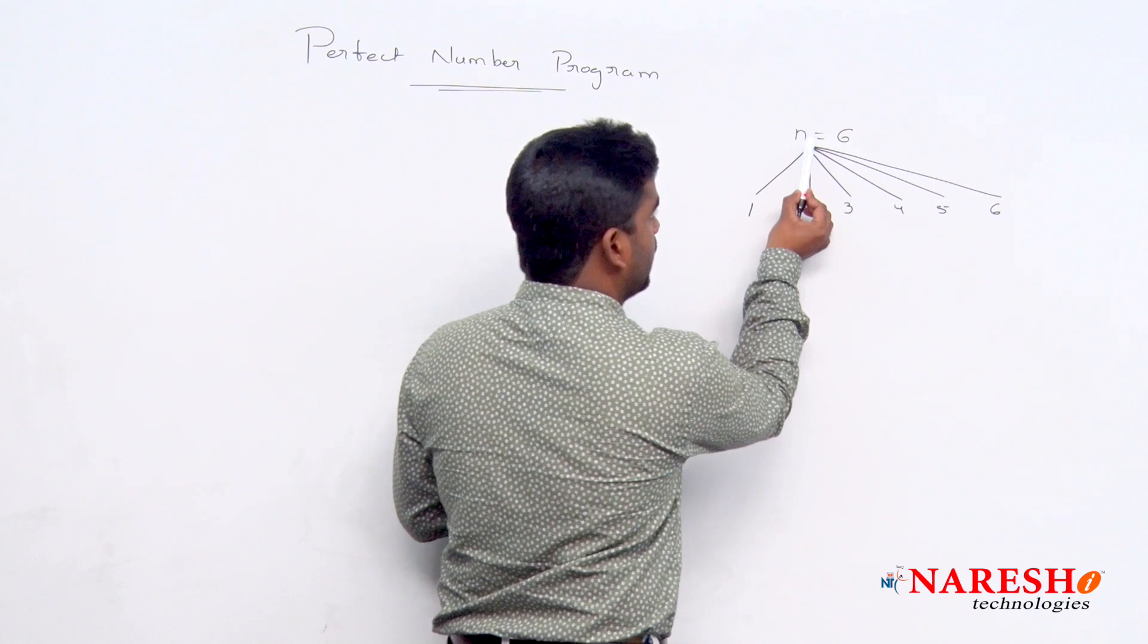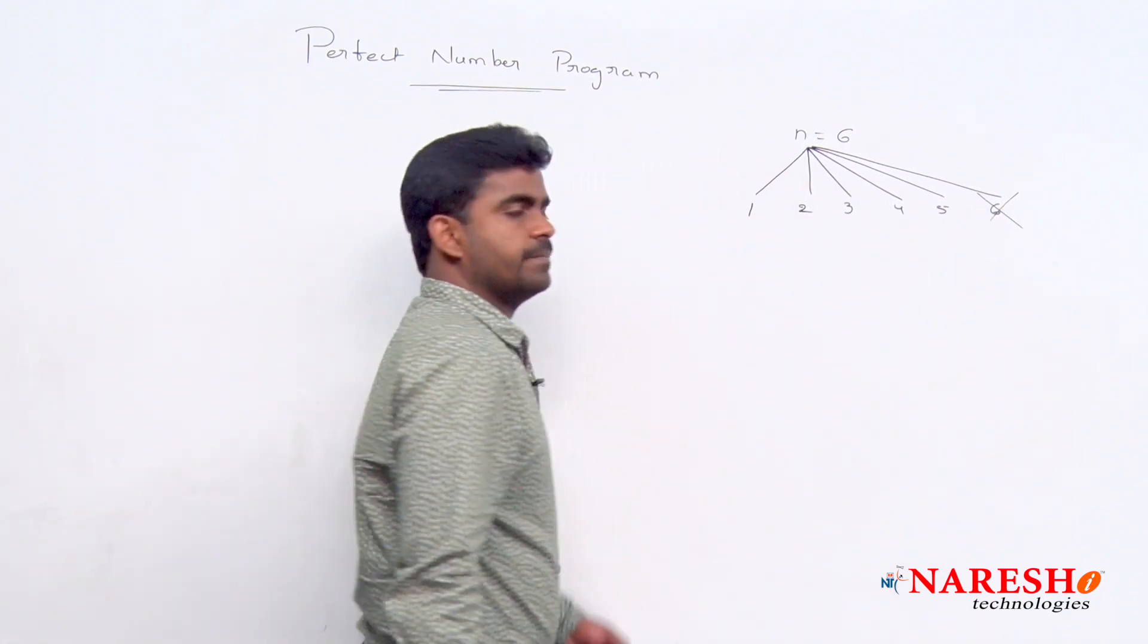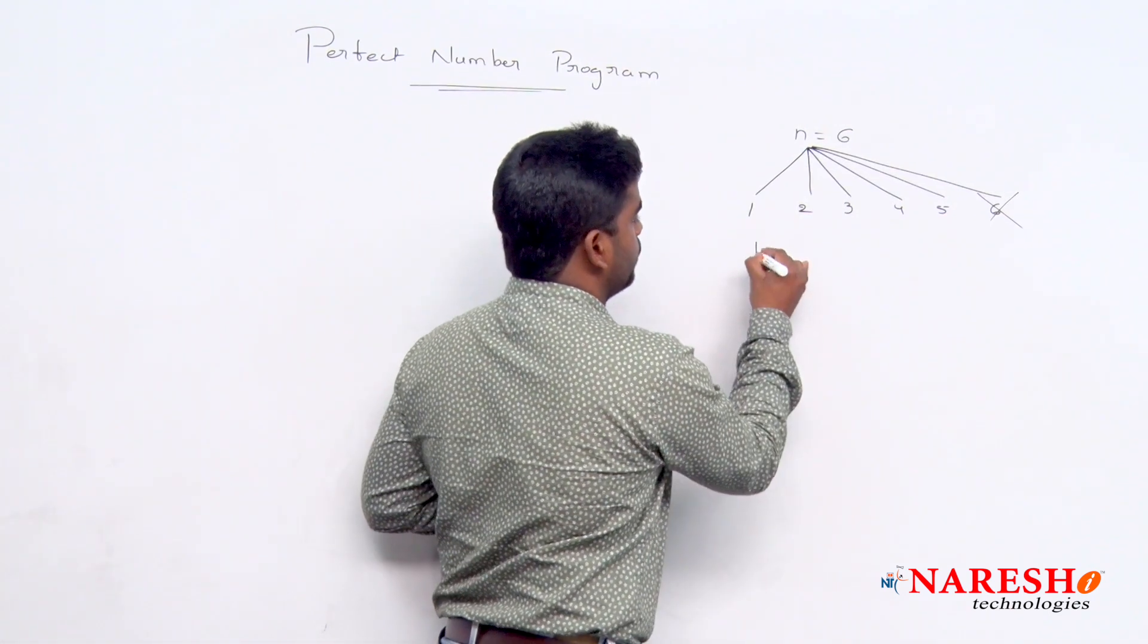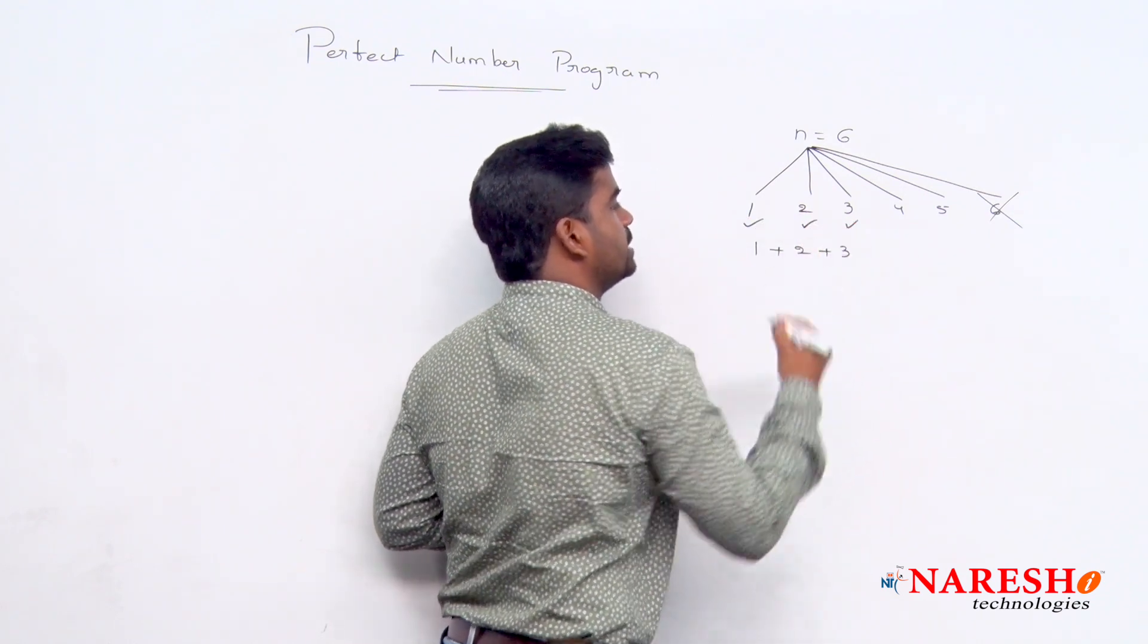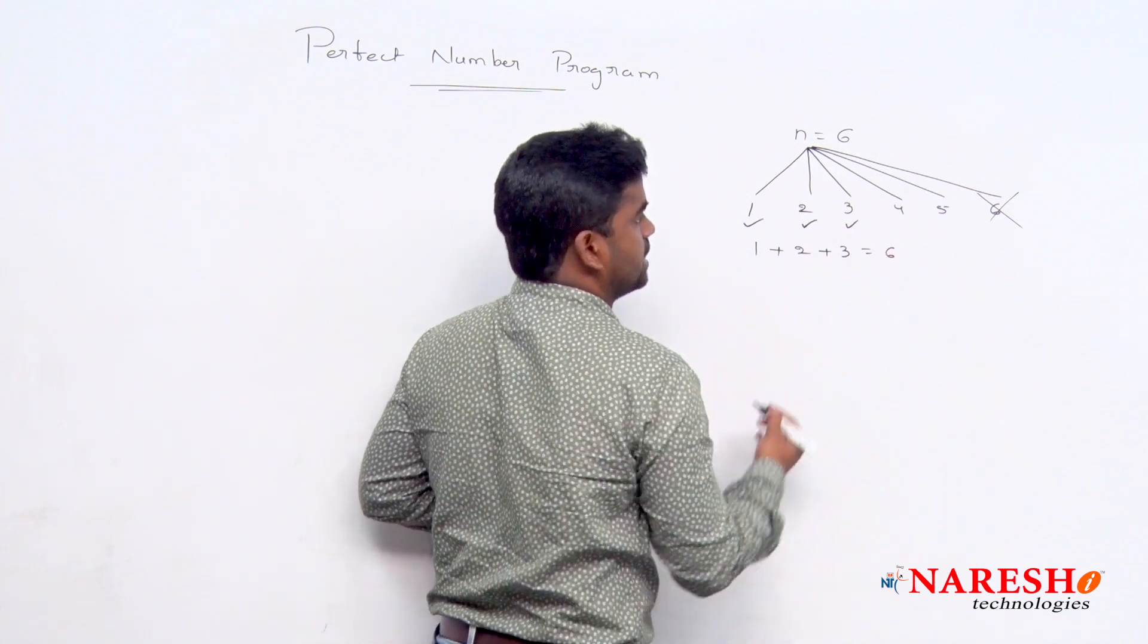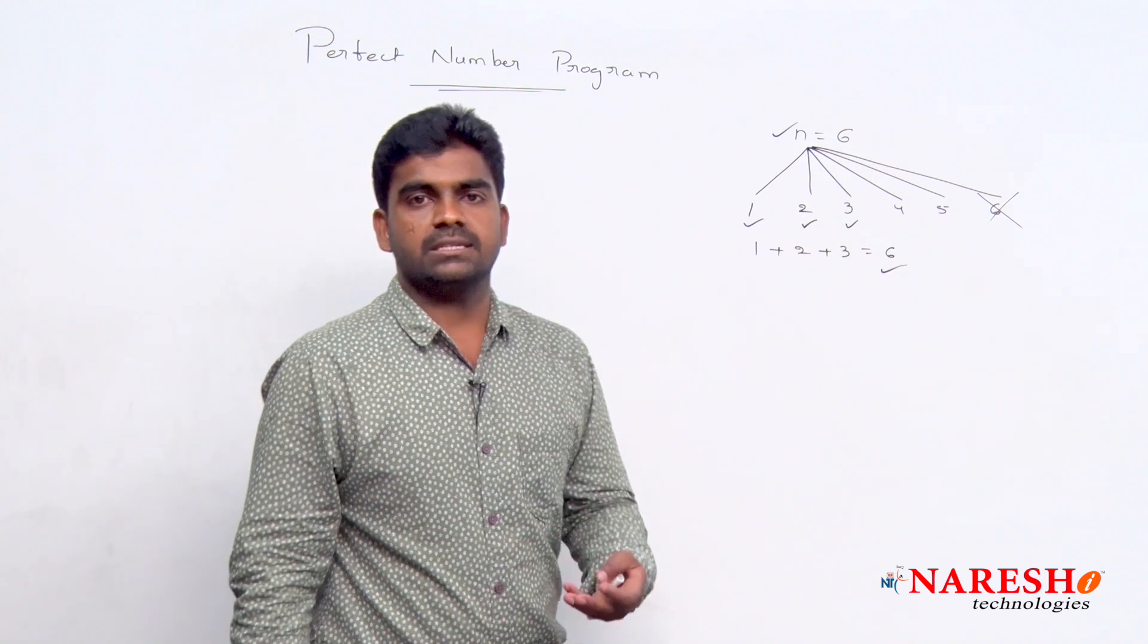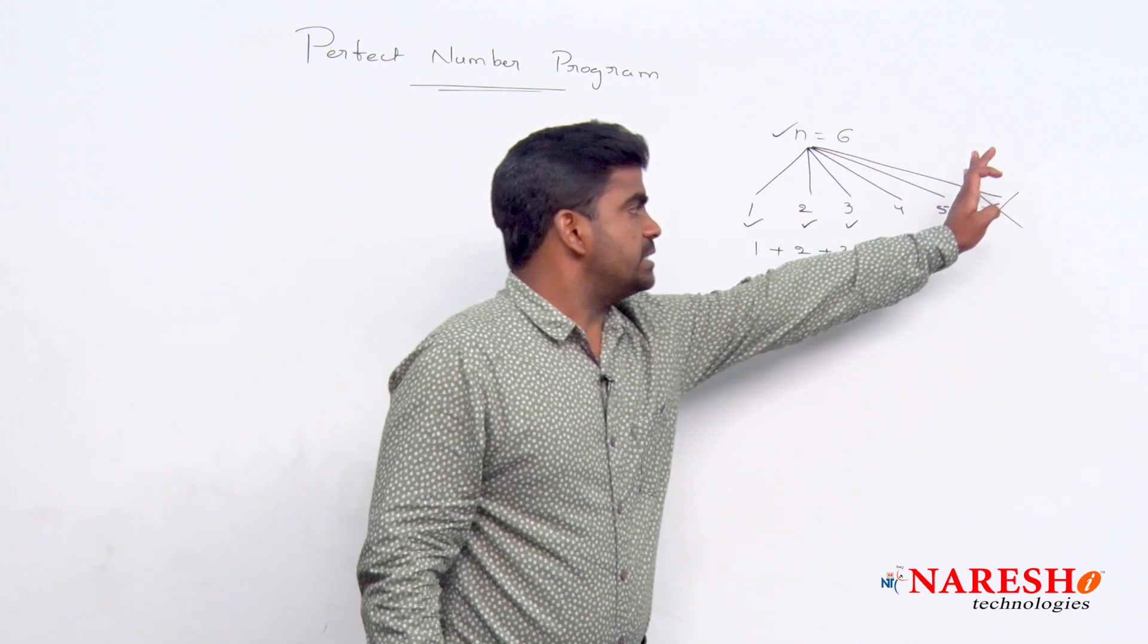Anyway, for n, n is one factor, but no need to check with itself. So remaining only we need to count. For example, here 1 plus 2 plus 3, because 1 is a factor, 2 is a factor, 3 is a factor. If you add, look at this, the result is 6 again. If n value and the result both are same, we can say that n is a perfect number.